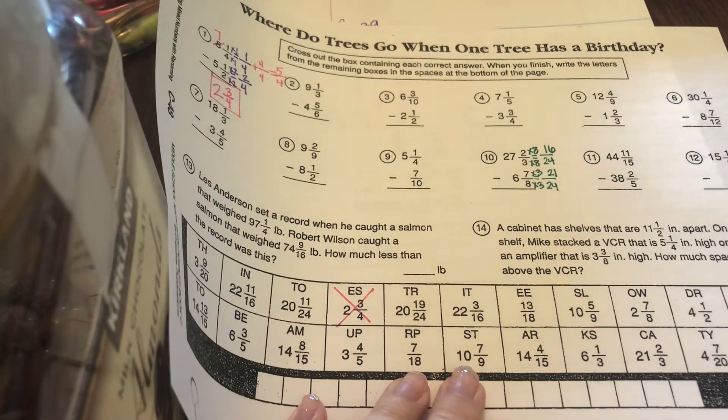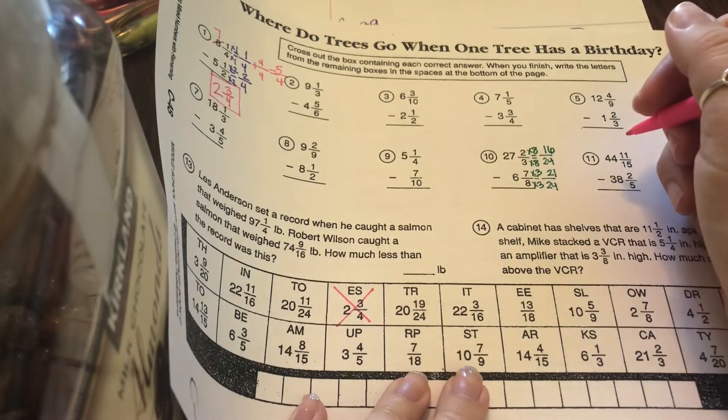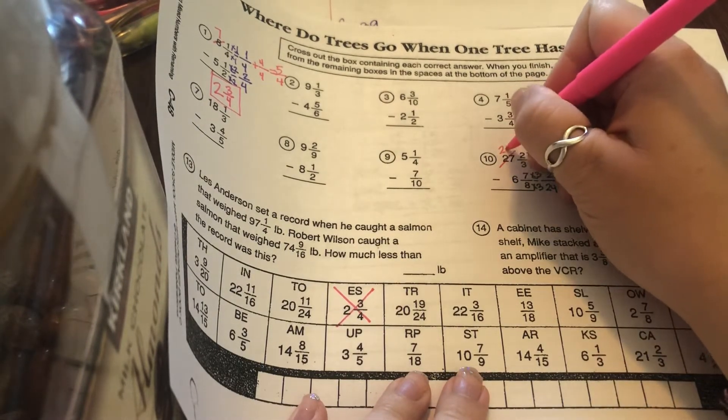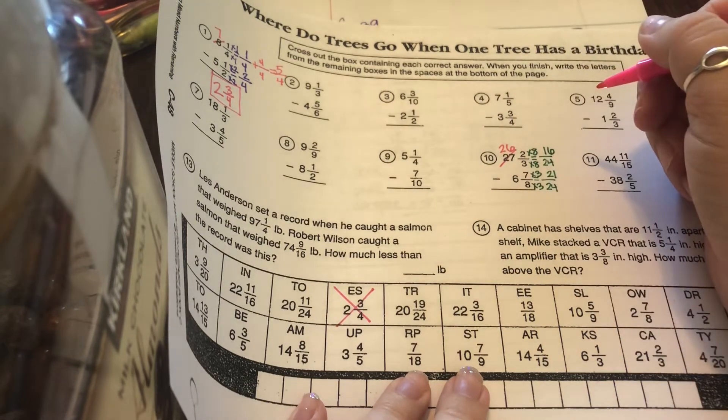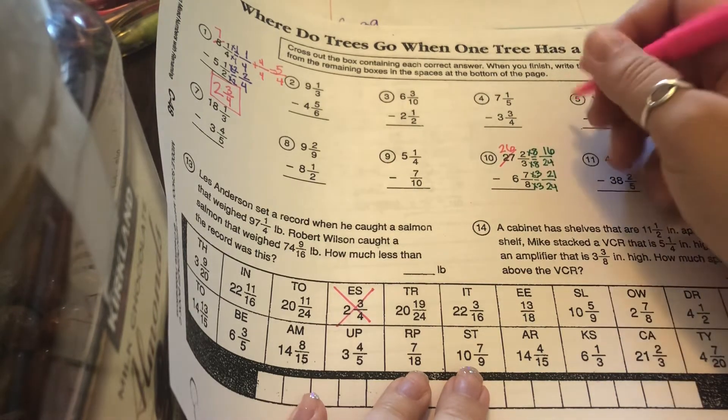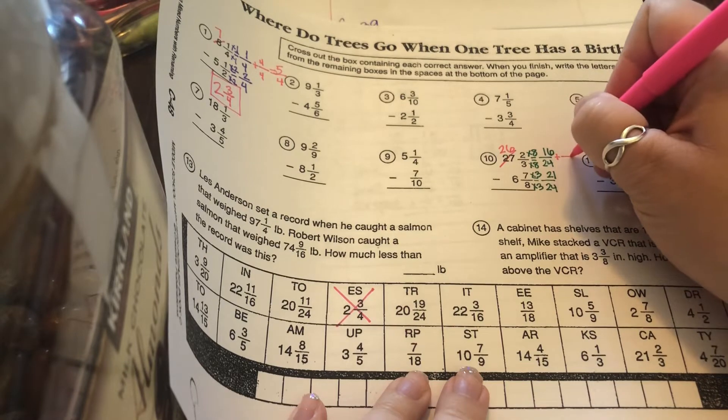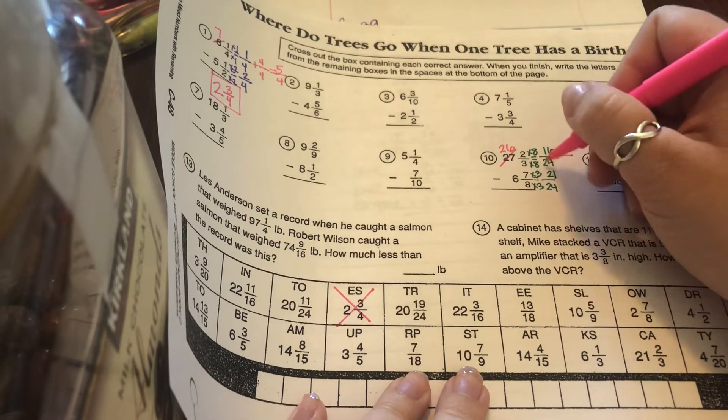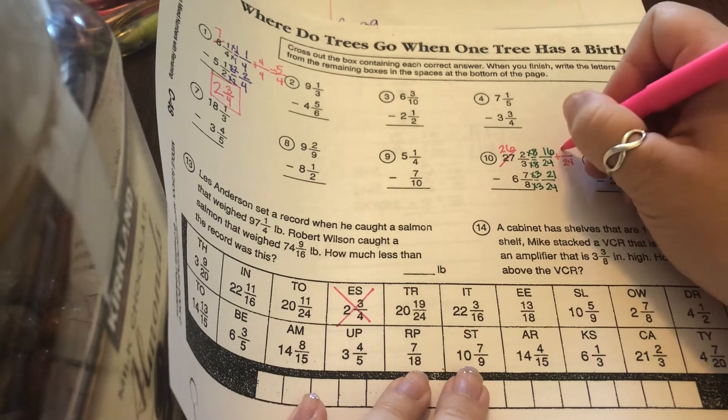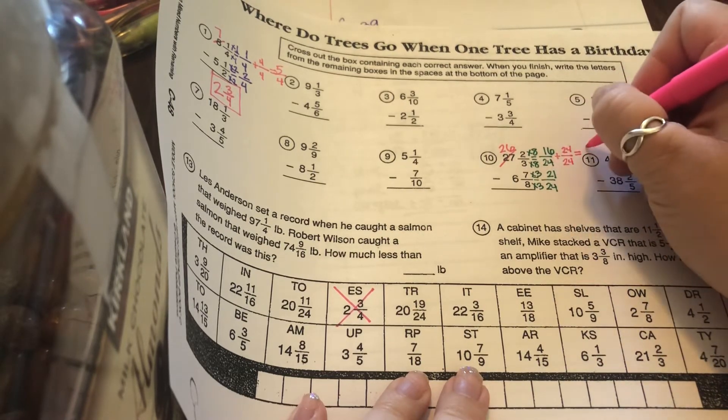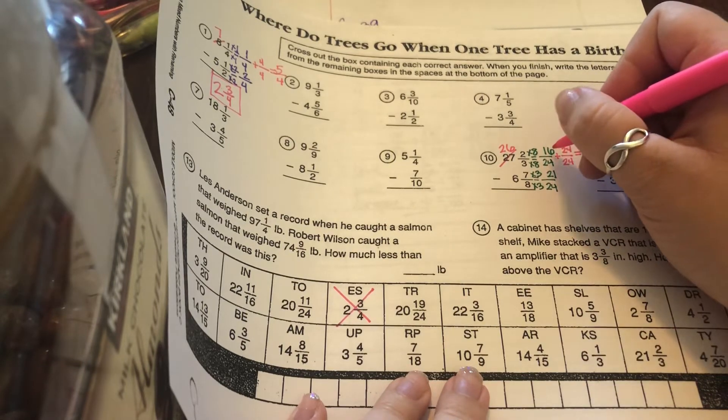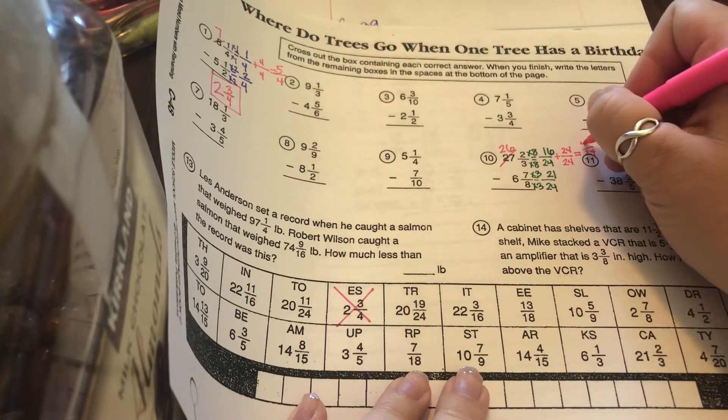When you go to subtract, can you take 21 away from 16? Unfortunately, no. So, you have to borrow from the whole number. So, that 27 now becomes 26. And then I go to add 1 as a fraction of the same number over itself, and I'm going to pick whatever that denominator was. Now, the denominators stay the same, and you can combine those numerators. 16 plus 24 is 40.